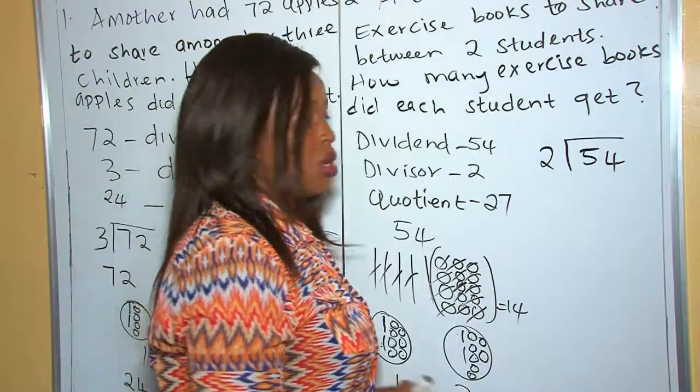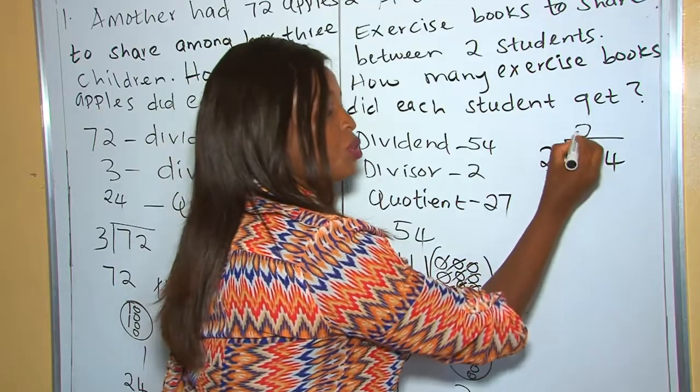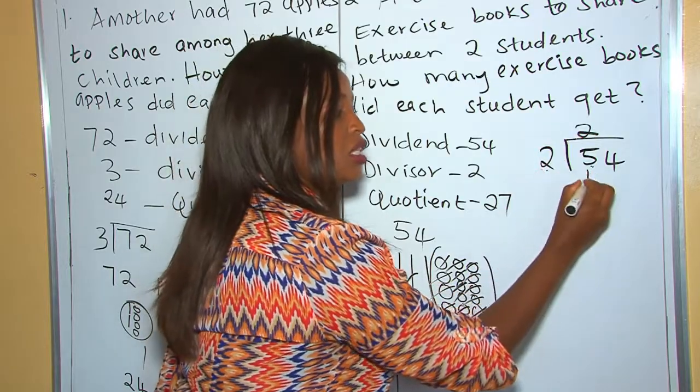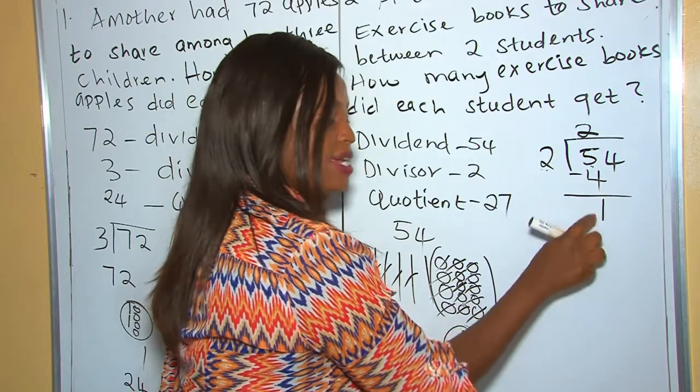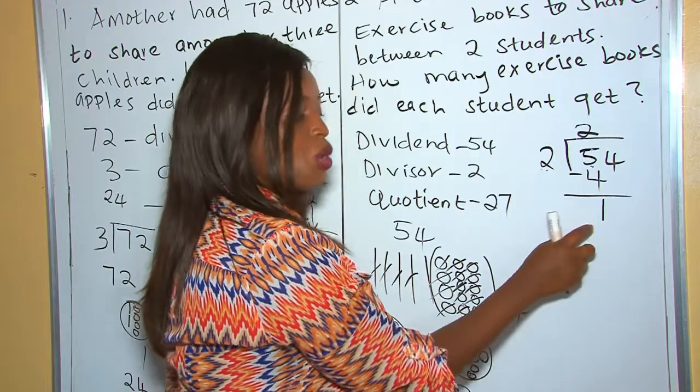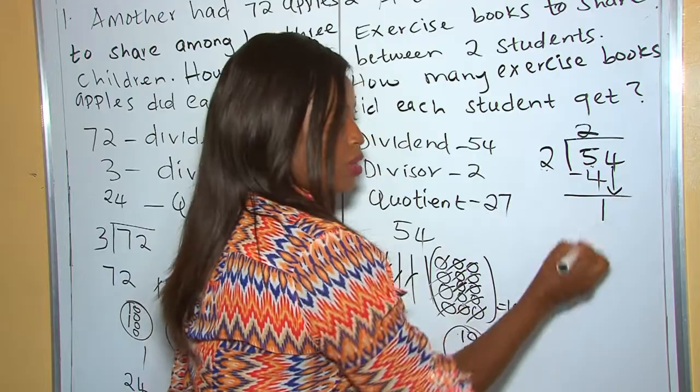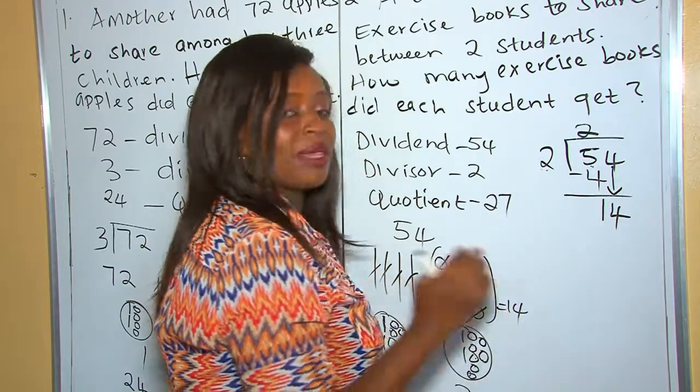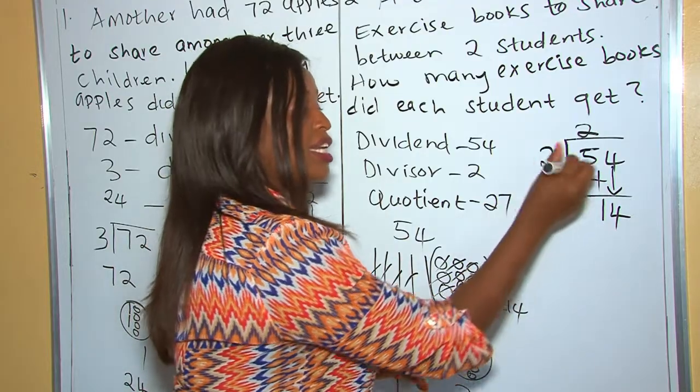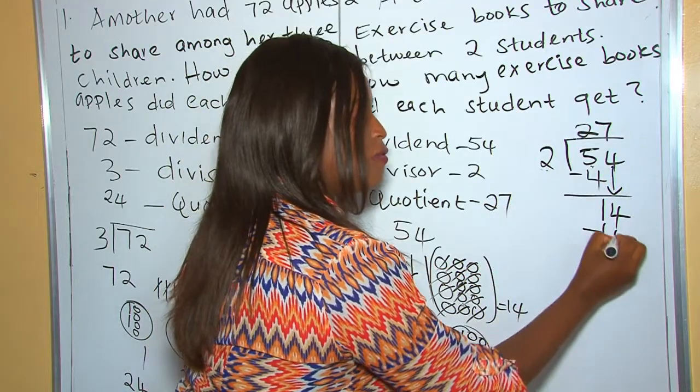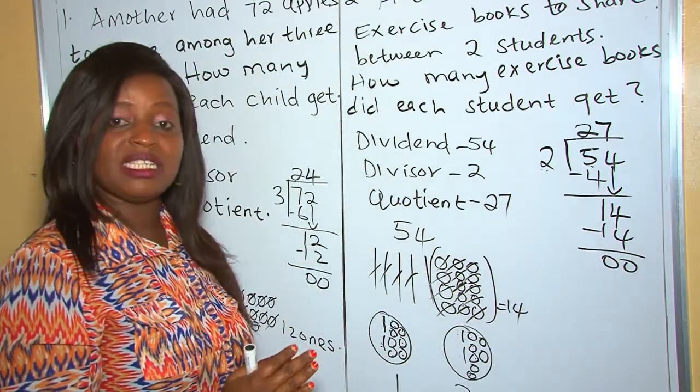In long division, you're also beginning with tens. So 5 tens divided by 2, it's 2, because 2 times 2 is 4. Take away now, 5 take away 4, it's 1. This 1, it's 1 ten. And because 1 can't divide 2, we drop our ones there, and they become 14 ones. 14 divided by 2, it's 7, because of 14. And as you can see, there isn't any remainder. And our answer is 27.